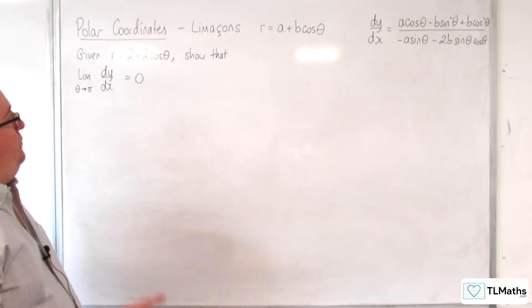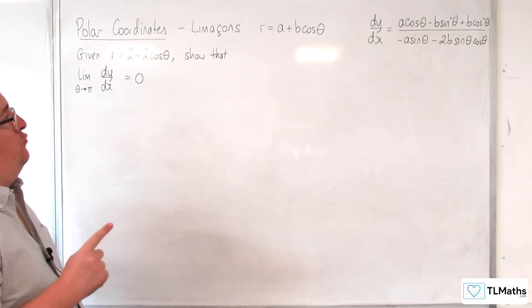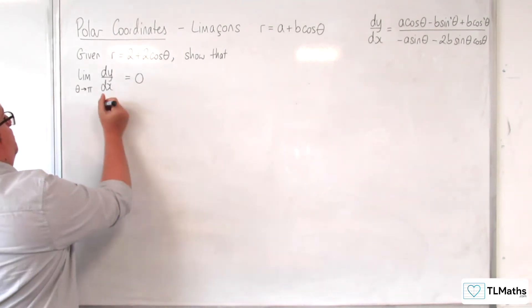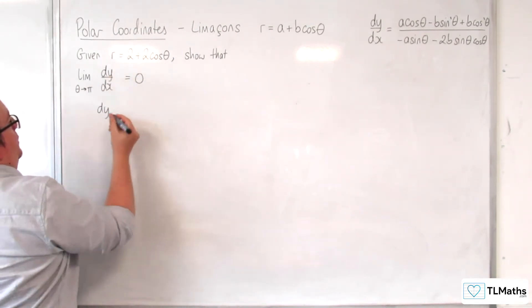So first of all, let's write down what dy by dx is when a is 2 and b is 2.